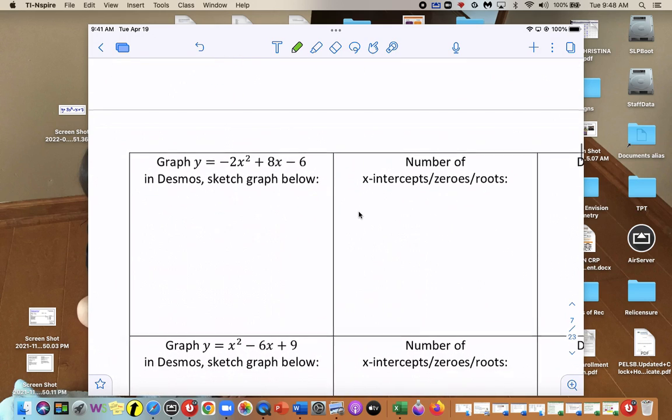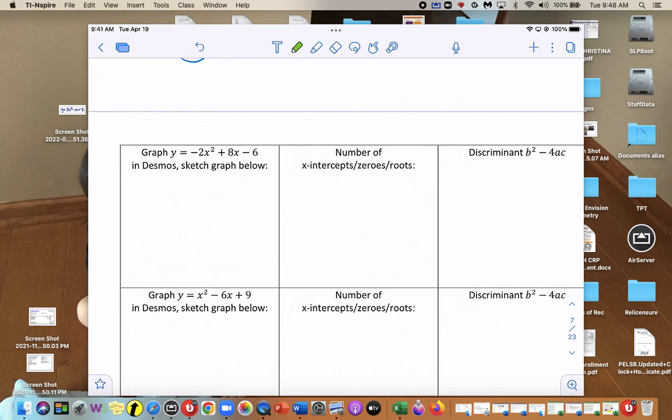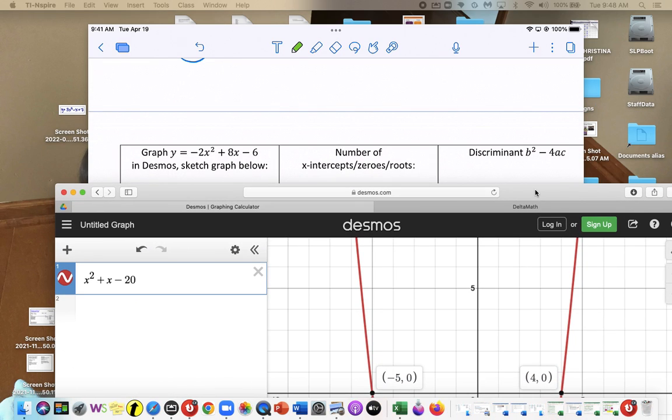So in class, again, we'll sketch it. We'll say the number of roots and so on. So this one right here, negative 2x squared. We'll do one more, and then you should be able to do the rest on your own.